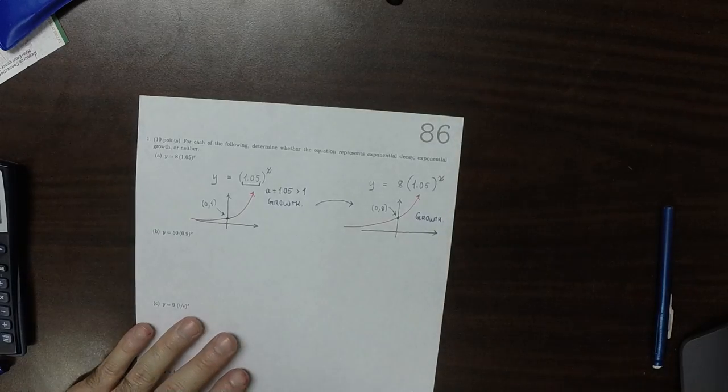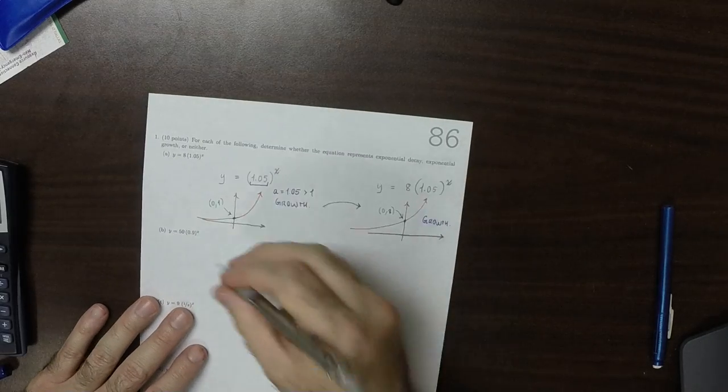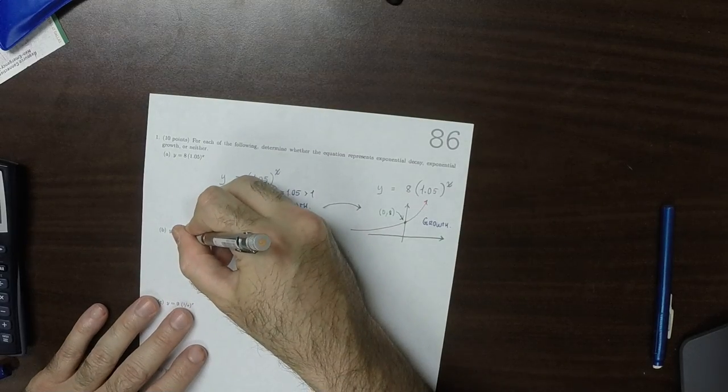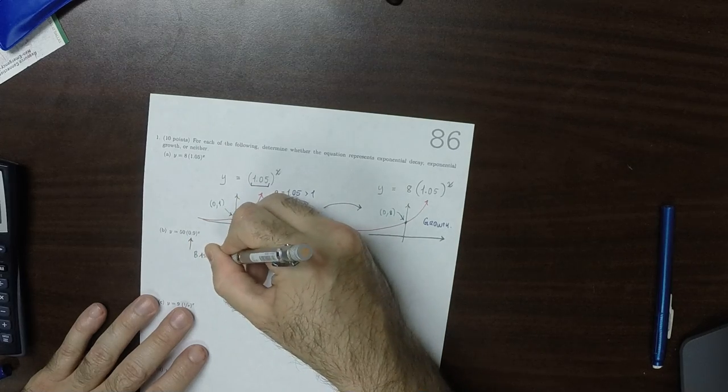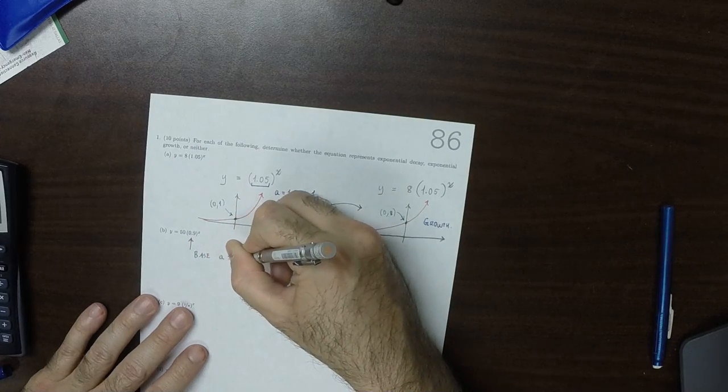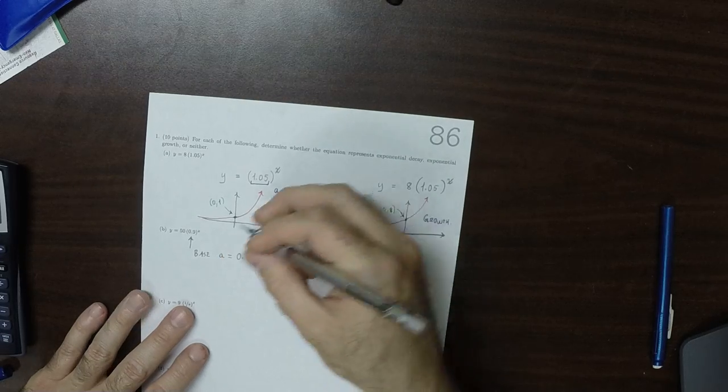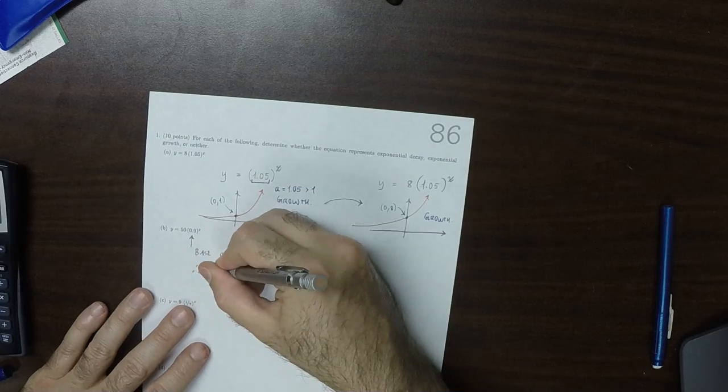For similar reasons, the base a equals 0.9, which is less than 1, and therefore this is decay.